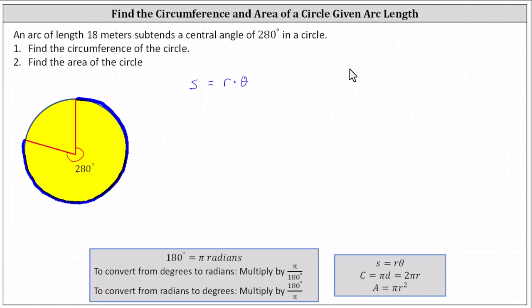We begin by writing 280 degrees as a fraction with the denominator of one. Then we multiply by pi divided by 180 degrees. Simplifying before multiplying, the units of degrees simplify out, and 180 and 280 share a common factor of 20.